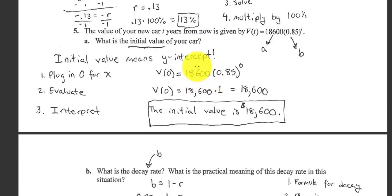Number 5. They give you an equation. This looks like Y equals A, B to the X. Instead, they use V and T. So right away, I know A is always my initial value or my starting value. So we're talking about a car, value of a car. So I know the initial value of the car is 18,600.